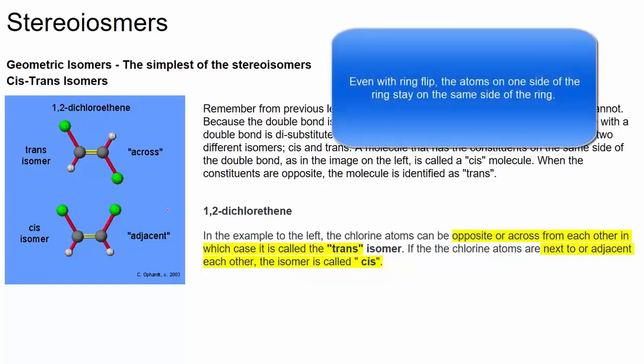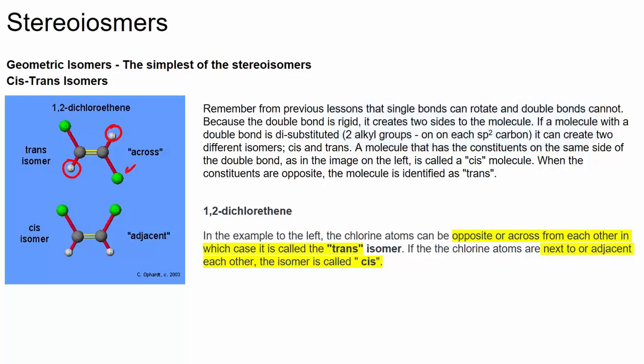Remember that single bonds can rotate but double bonds cannot. Ring structures also tend to be more rigid than a standard sigma bond. So if we have a disubstituted double bond, here we have our hydrogen and here we have chlorine, with our atoms arranged in a way that they are opposite one another.